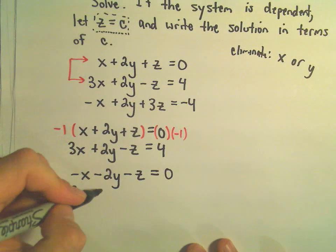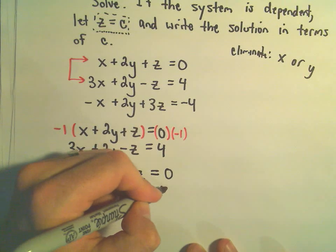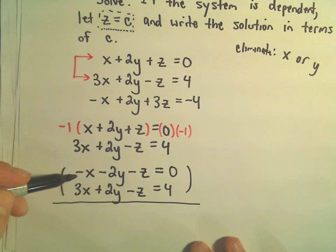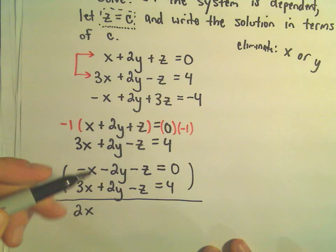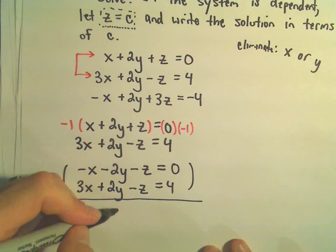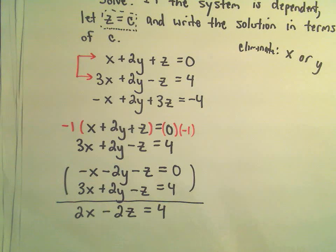I'm going to leave my second equation just like it was. And again, if we do our elimination by addition, let's see, negative x plus 3x would give us a positive 2x. The y's would cancel out. We would have negative z plus negative z, which would be negative 2z. 0 plus 4 is 4. So we've got this equation now involving only x and z. And again, if you wanted to, you could even divide both sides by 2 to make the numbers a little smaller. But you don't have to.